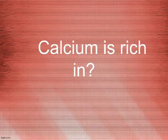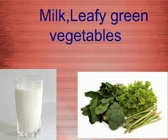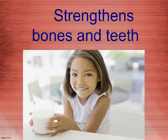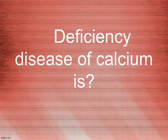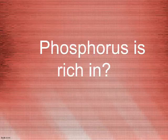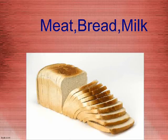Calcium is rich in milk and leafy green vegetables. Calcium helps you in strengthening bones and teeth. The deficiency disease of calcium results in soft and weak bones and bad teeth. Phosphorus is rich in meat, bread, and milk.